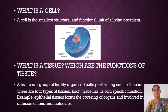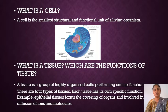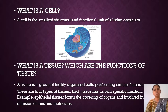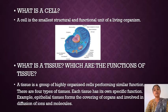There are four types of tissues, which we have already learned in 9th standard. The four types of tissues are epithelial tissues, connective tissues, muscular and nervous tissues. For example, an epithelial tissue is a tissue that covers any organ.